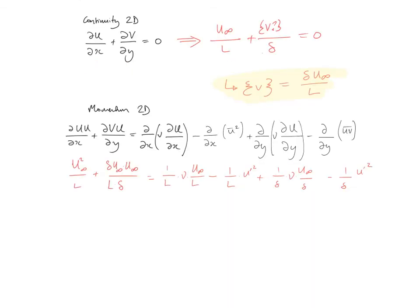As such, so we've done this term by term. So we've said for du squared over dx, we have u infinity squared over L. For vu over dy, we take our expression for v, so delta u infinity over L, and times it by u infinity, divided by our y dimension, which is delta, and so on. So on the next term, we have d over dx, so that's 1 over L, nu stays the same, and we have du, so u infinity over dx, L. Minus d over dx, 1 over L. Now for our turbulent scale, we introduce our fluctuating velocity, u prime squared, and so on. So we obtain the following order of magnitude terms.